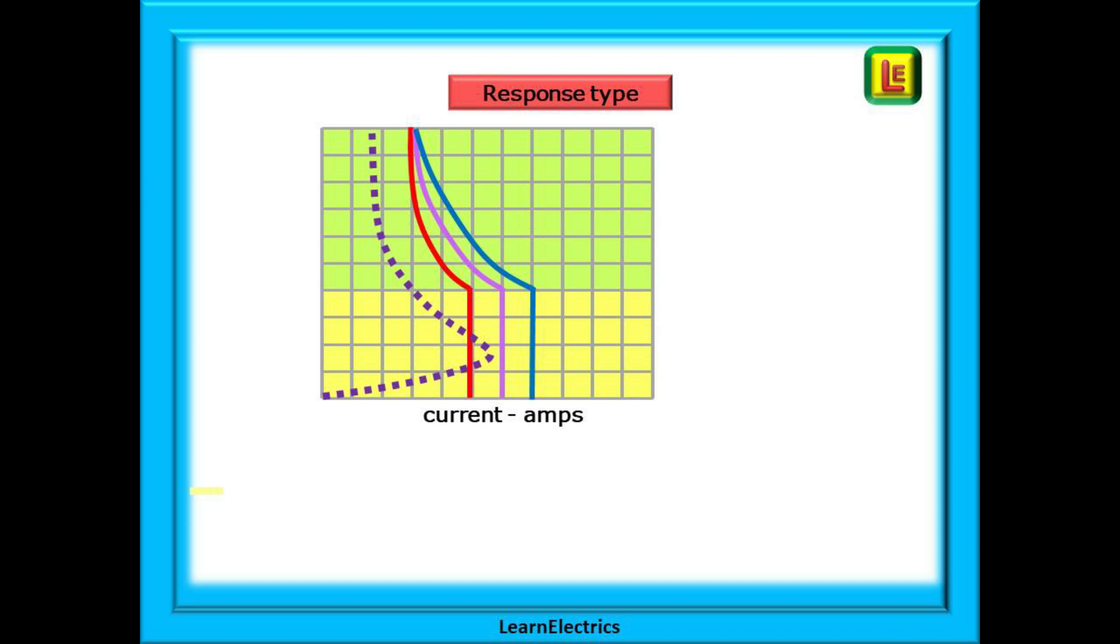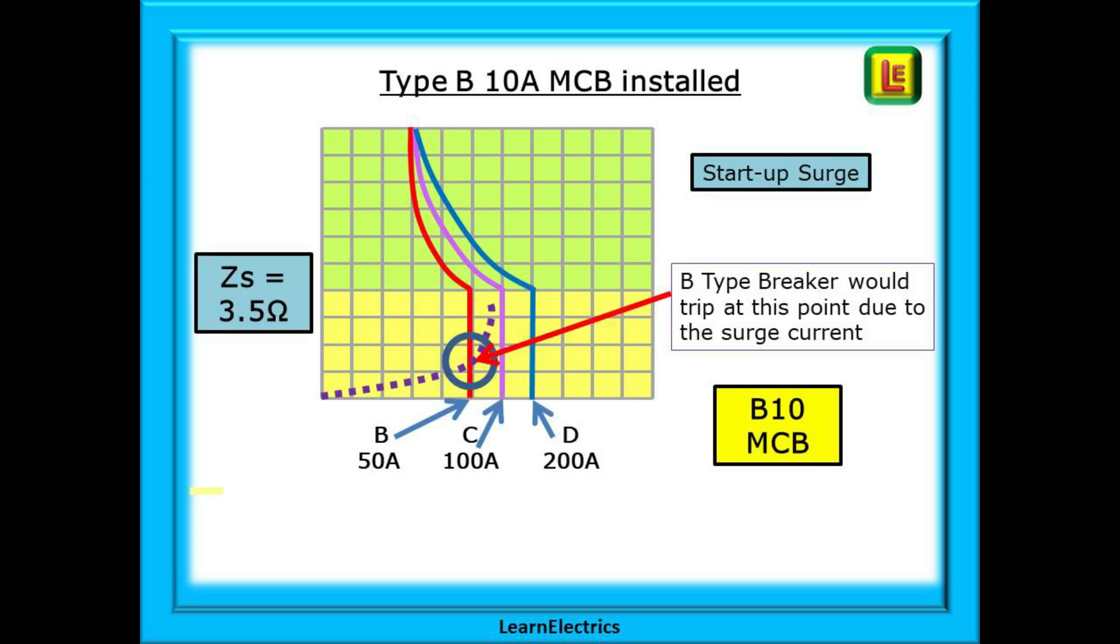What would happen though if this was a small workshop with instead a lathe with an electric motor? It is still a type B 10 amp MCB and the ZS is still 3.5 ohms. The startup surge of the motor is much greater due to the nature of electric motors. The purple current line in our example surges past the B type red line. The MCB trips, cutting off the power to the lathe motor at the point where the red line is crossed.